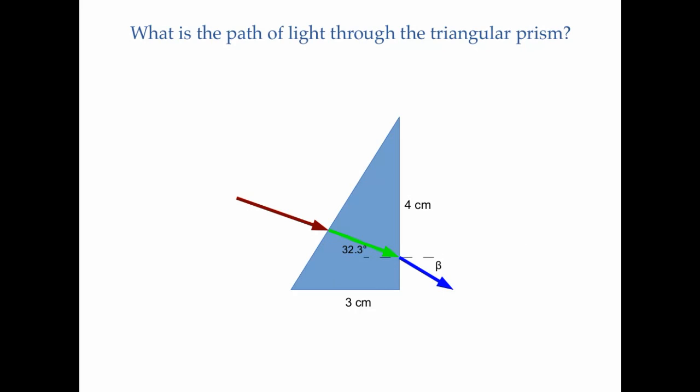And so now we can plug in 32.3 degrees and solve for beta. N1 sine theta 1 is equal to N2 sine theta 2. In this case, 1.5 times sine of 32.3 is equal to 1 times the sine of beta. And beta is 53.28 degrees. So just cleaning up the diagram, I can draw in what the path of light looks like through this prism.